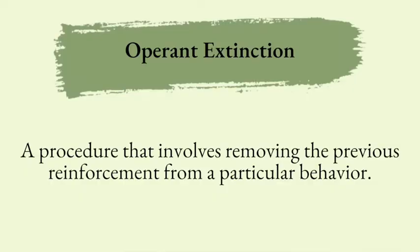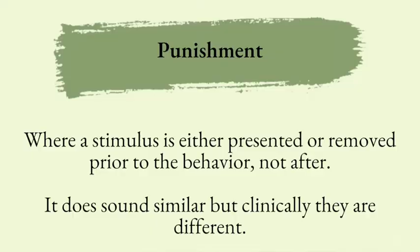Operant extinction is a procedure that involves removing the previous reinforcement from a particular behavior. Behaviors that go under extinction disappear entirely from that individual's repertoire. Per my example, the child that no longer receives candy during operant extinction — the reinforcement is no longer presented and therefore the screaming and crying no longer occurs in the future. This is in contrast to punishment where a stimulus is either presented or removed. The primary difference is that the stimulus change is not occurring contingent upon the behavior in extinction, and therefore the behavior cannot be reinforced or punished.